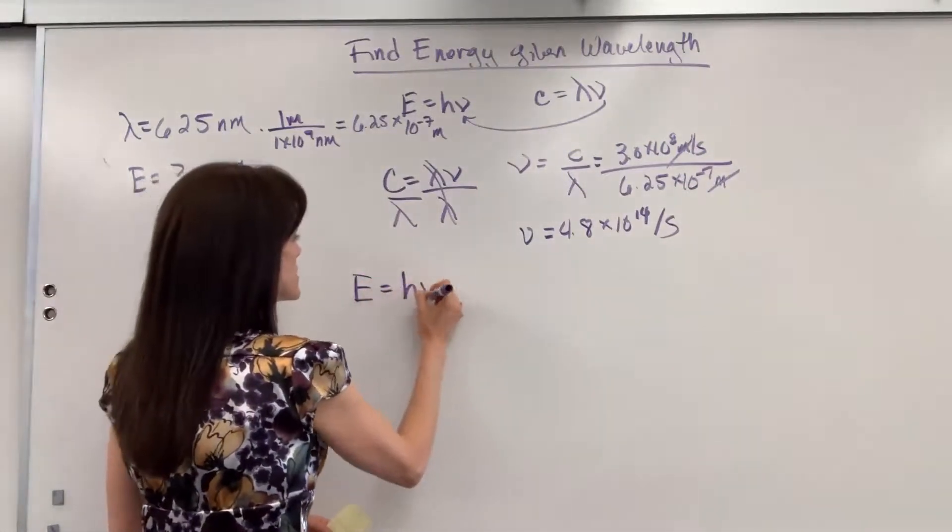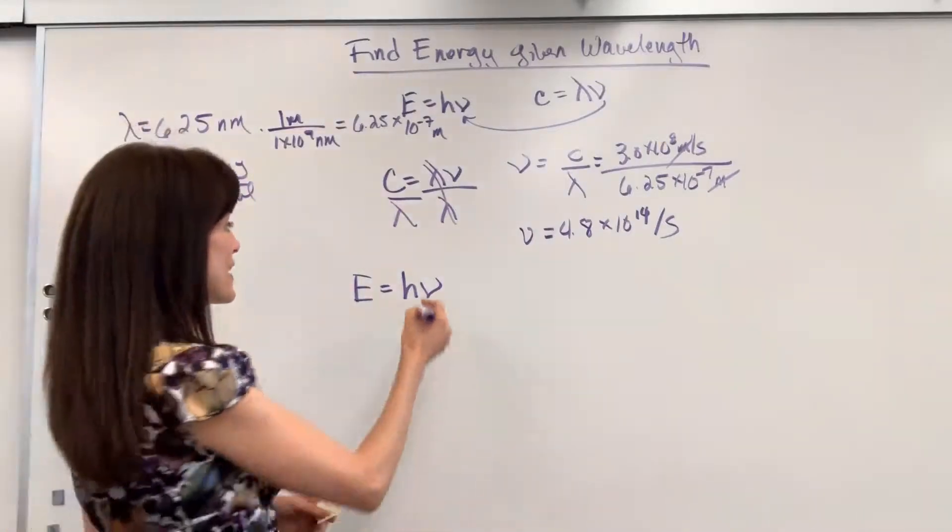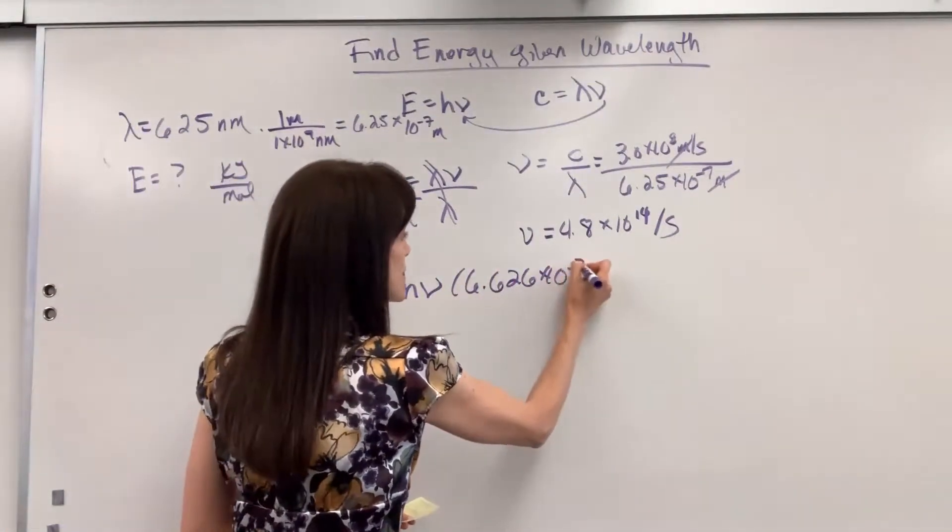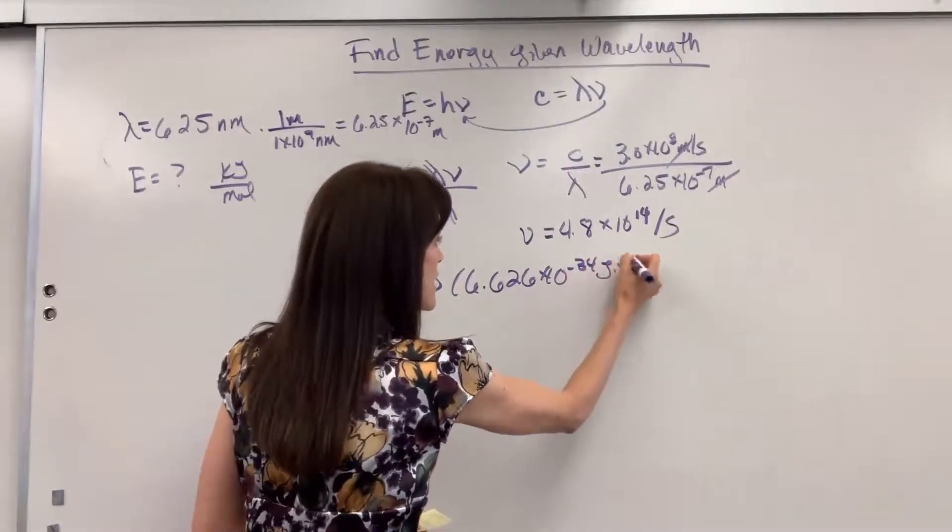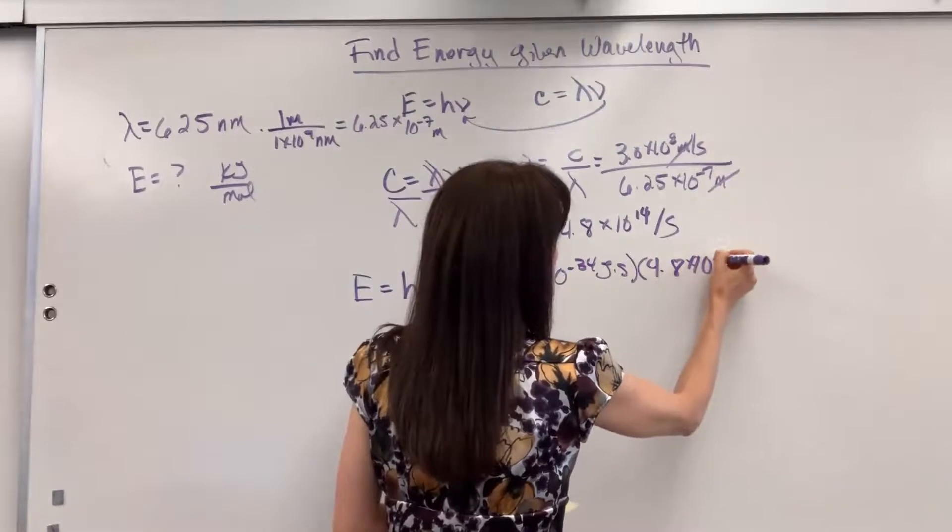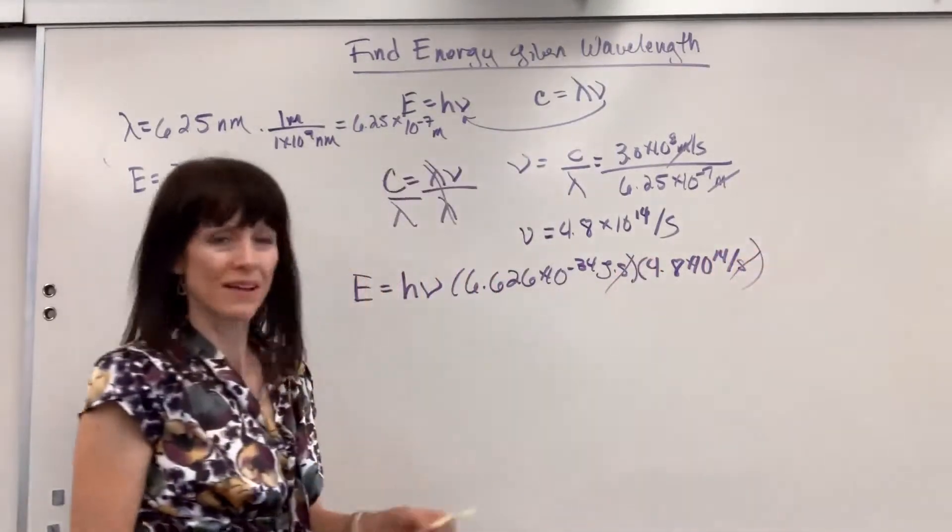So energy equals Planck's constant times nu. Energy is already by itself, so we can go ahead and plug in 6.626 times 10 to the negative 34 joules times second times 4.8 times 10 to the 14 per second. Seconds cancel. We'll be left with joules.